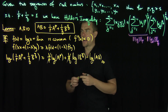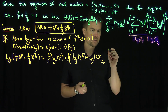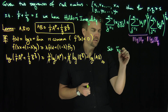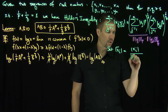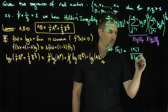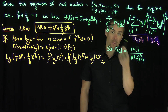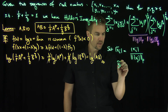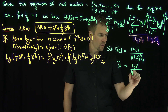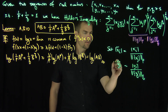Now we use this lemma by applying it to a new normalized sequence. We set |x̃ᵢ| = |xᵢ| divided by the lp norm of the sequence xⱼ. If the lp norm were zero, all xⱼ's would be zero and the inequality would be trivial. Similarly, we set ỹᵢ = yᵢ divided by the lq norm of the sequence yⱼ.